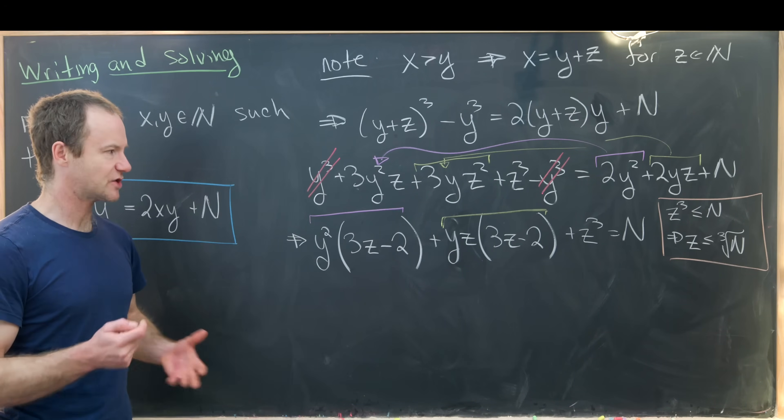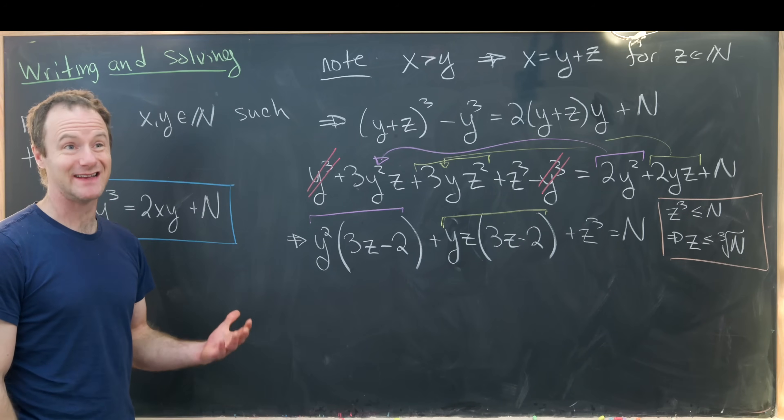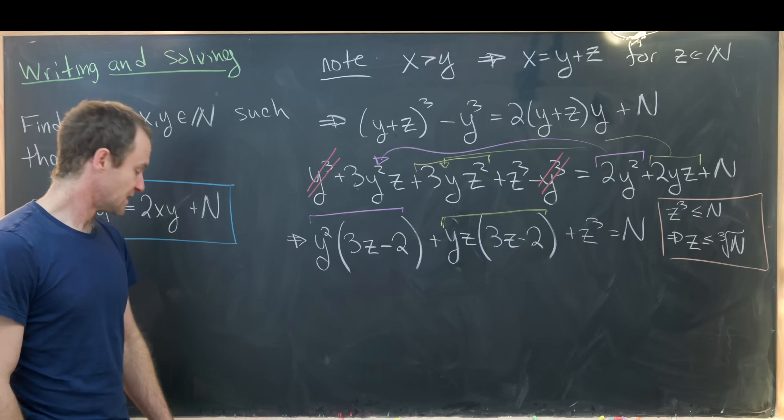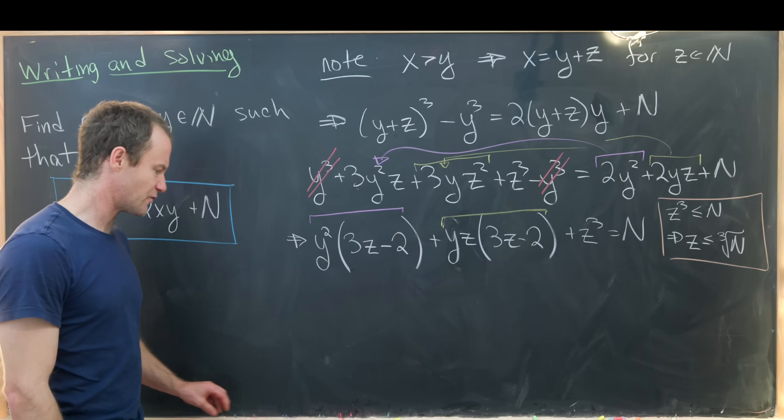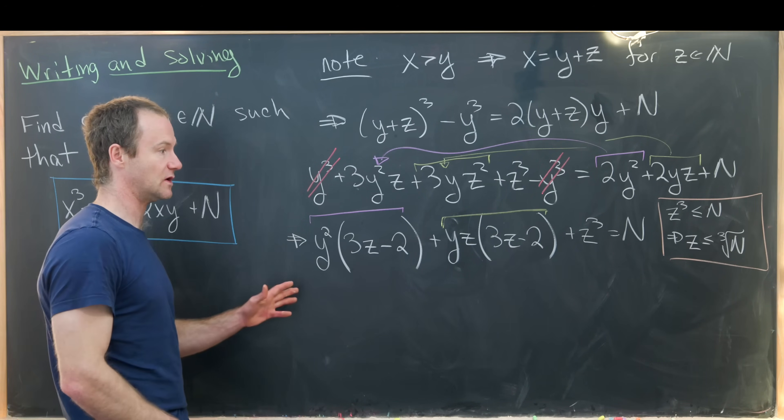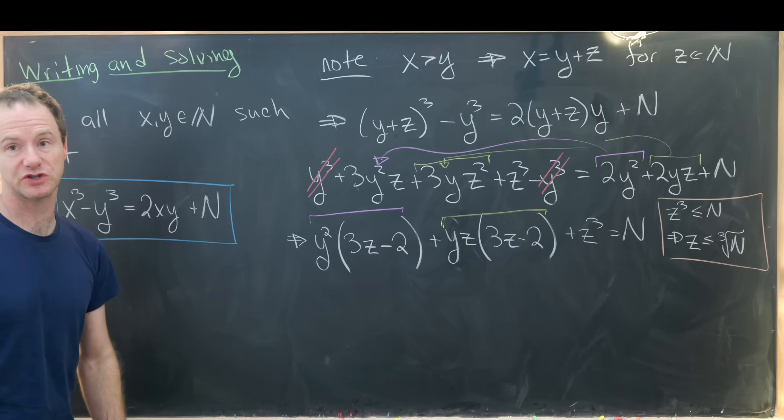So that means z will only take on a finite number of values depending on what N is. And now we're into cooking up kind of a nice solution here.